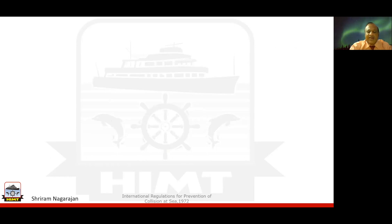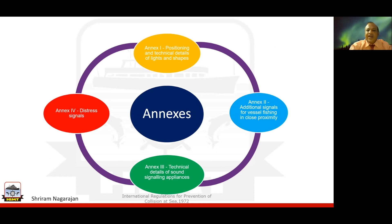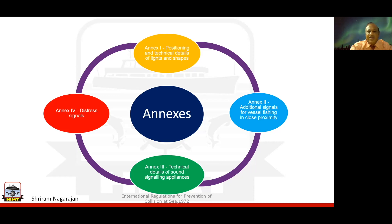That completes Part A to Part F. Moving on to the annexes: Annex one talks about positioning and technical details of lights and shapes. Annex two gives information on additional signals for vessels fishing in close proximity. Annex three gives technical details of sound signaling appliances. Annex four, linking up with rule 37, gives guidelines for distress signals to be displayed on board.